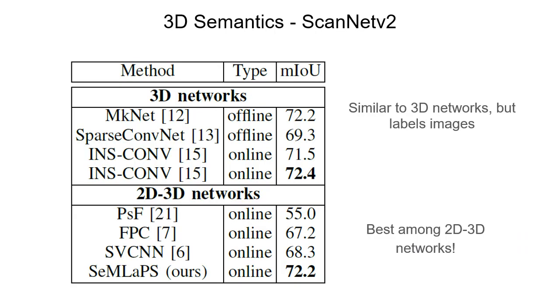First, we show 3D results on ScanNet validation sequences. Semlapse achieves the best result among 2D-3D network-based methods and matches the performance of 3D network-based methods, but also provides 2D semantic labeling, which is important for other semantic SLAM tasks and facilitates the cross-sensor generalization ability, which we will show later.